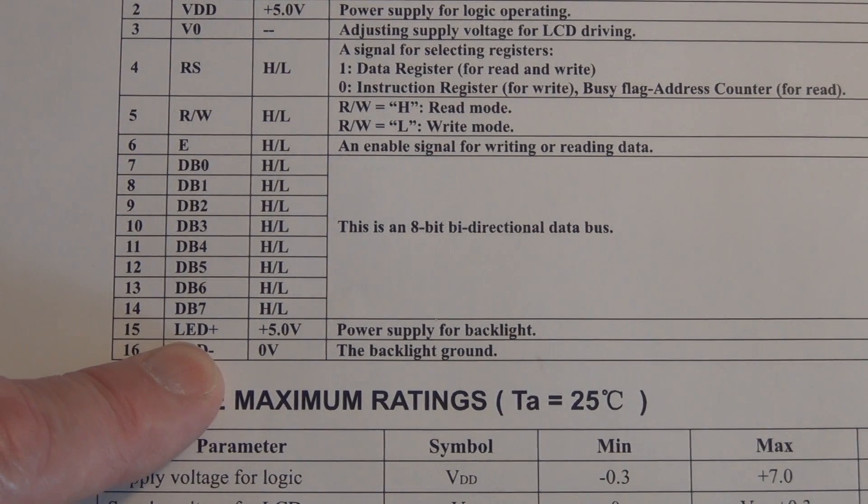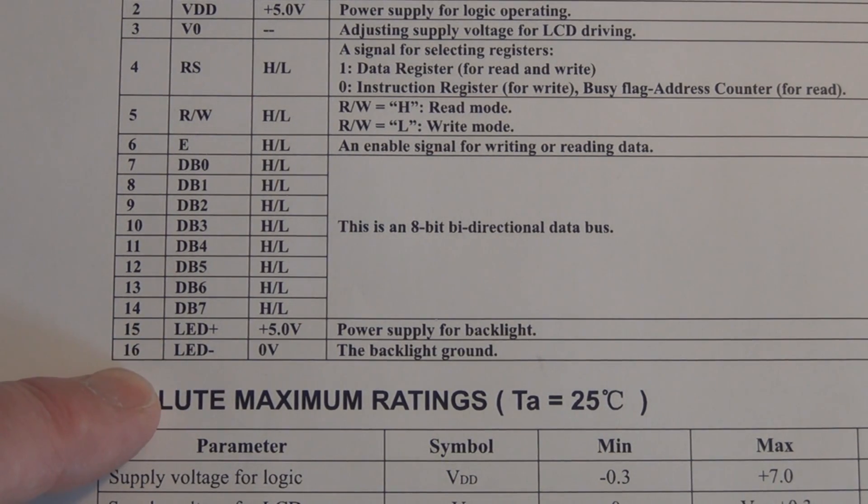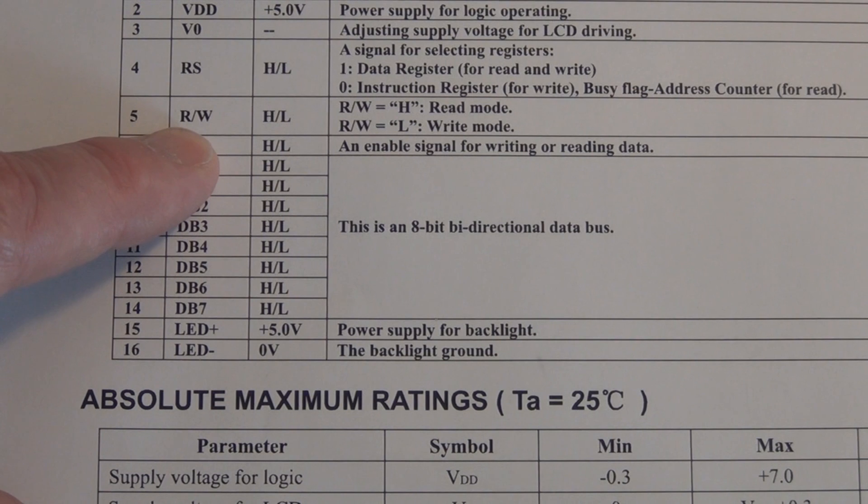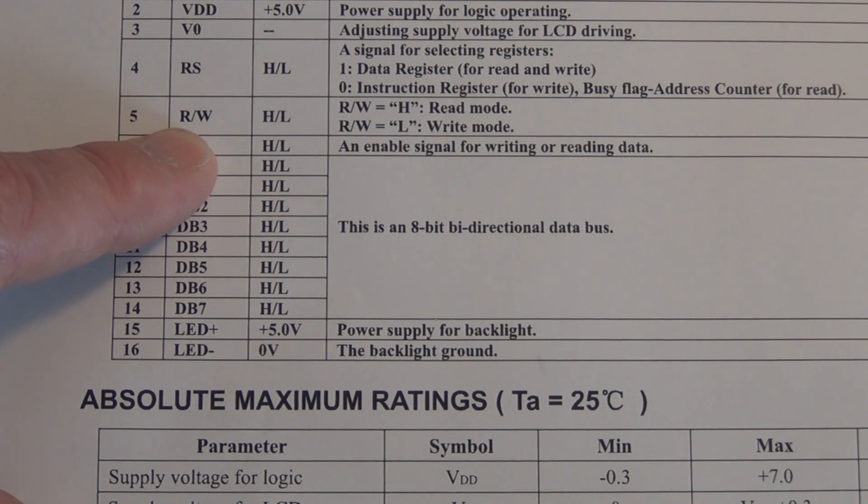We've got the power supply for the backlight, which is pin 15, and pin 16 is the ground for the backlight. Read write - we're going to ground pin 5 here because we're only going to write to the display. We're not going to be reading. As I mentioned earlier, we can actually read from the display also.